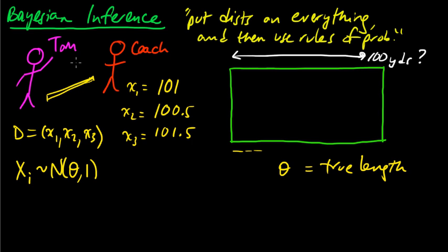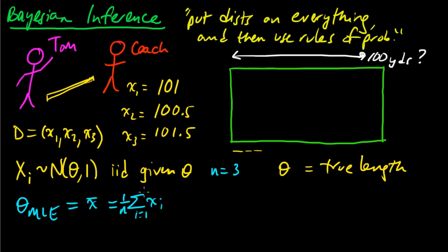And so Tom says to himself, OK, well, now I have this model, and also I should assume that these are independent, or IID, given this theta. And so Tom says, OK, now, now that I have this, I can compute the maximum likelihood estimate. I can compute theta MLE, which is just the sample mean of my data. So that's just the average. One over, let's call n, let's say n is three. So it's just one over n times the sum of the xi's. And here that's just, let's see, so that's just 101. So that's nice.